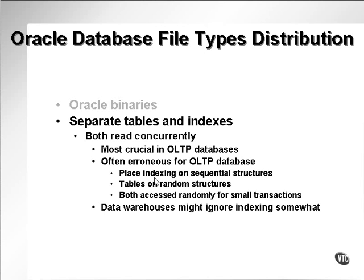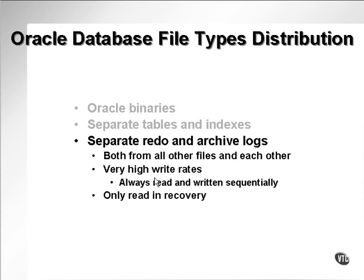In large databases with small transactions, large tables, and lots of rows, it's best to find indexes exactly and search with a binary tree structure rather than doing full scans. Data warehouses can ignore indexing somewhat, but not necessarily. The optimizer has a general rule that when it reads over 10% the size of a table, it actually full scans the table. Separate the redo and archive logs from all other files and each other, but preferably take the redo log files and put them on the fastest disk or disk structure possible.